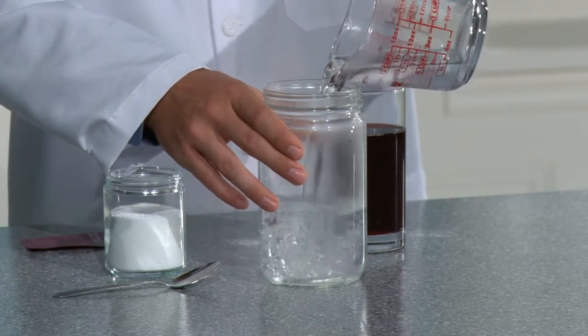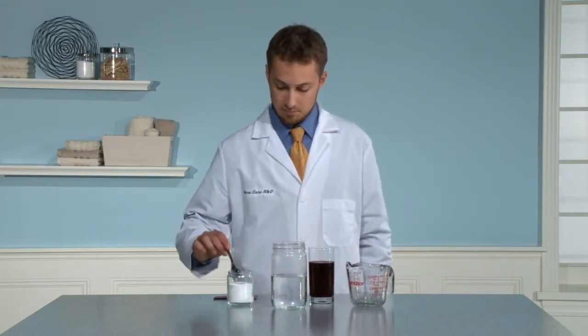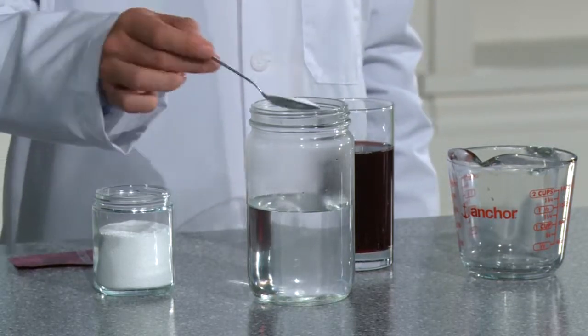Next, measure one liter of very hot tap water into the glass jar. Add five grams of SA8 all-fabric bleach and stir until it is all dissolved.